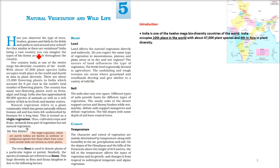Whenever you move around, you see different types of vegetation like trees, bushes, grasses, birds, and there are certain kinds of bio farms available throughout the country. India is one of the 12 mega biodiversity countries of the world.